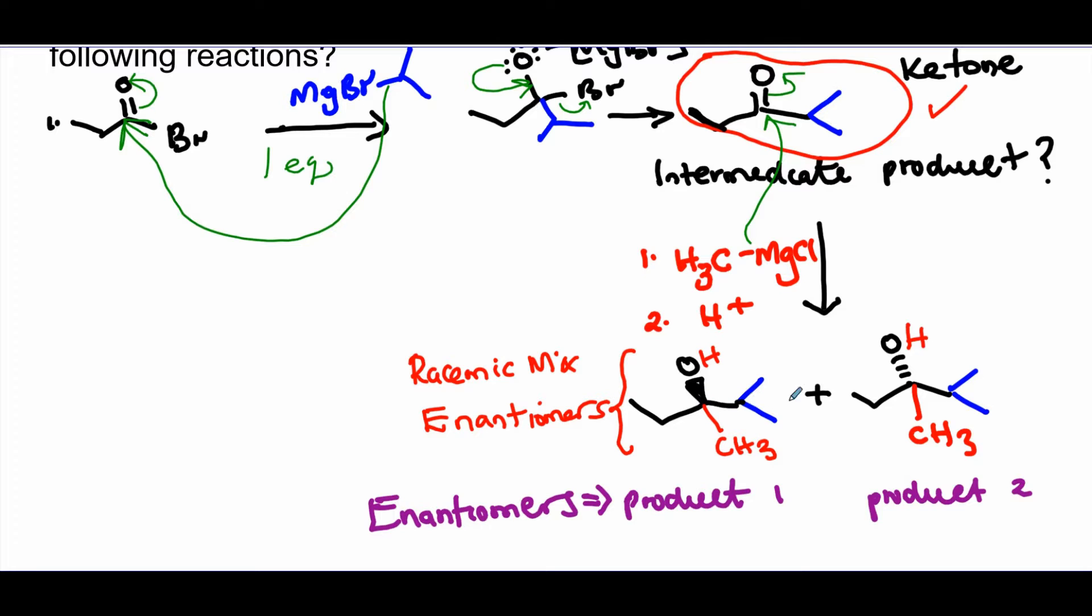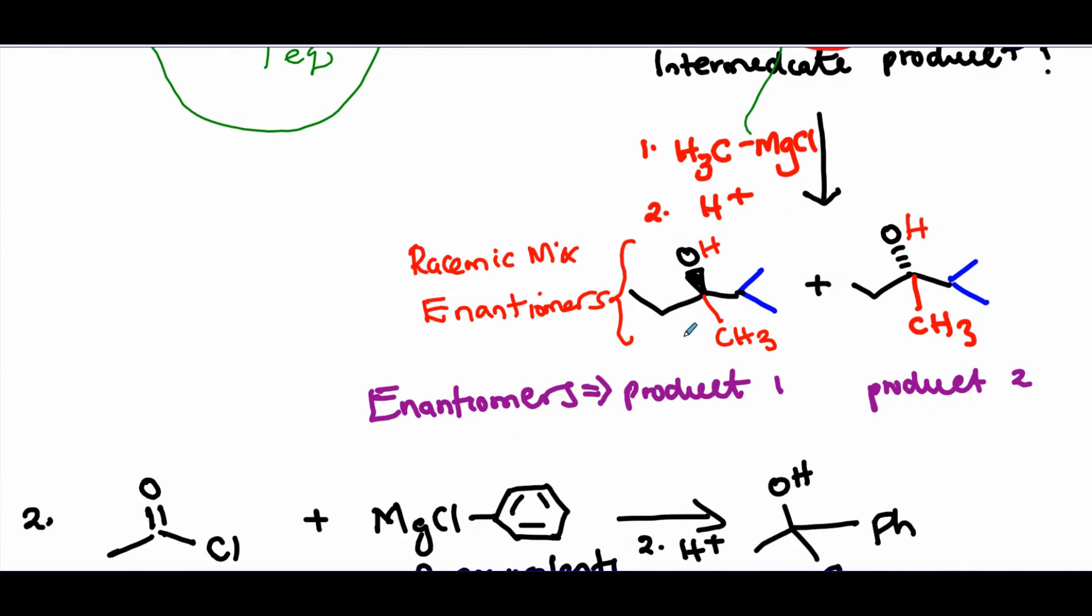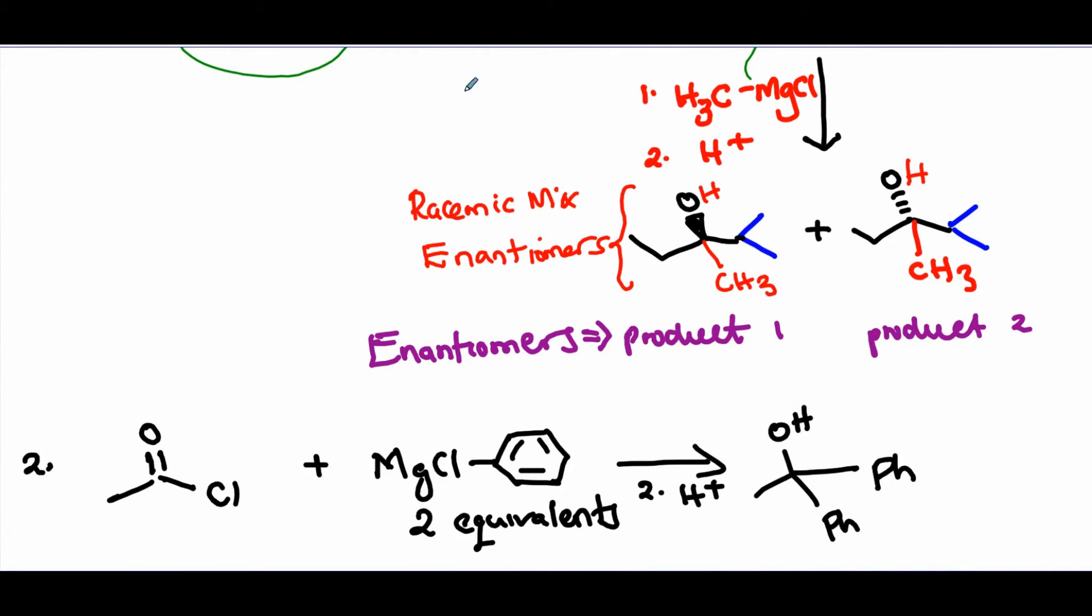Why enantiomers? Because they have opposite configuration and only one asymmetric carbon. One product has a wedge. The other one has a hatched bond. And that will happen because the Grignard can attack from the top face or from the bottom face to give these two products R and S configurations. The racemic mixtures because each has equal chance of getting formed. So this will be 50 percent and that will be 50 percent too.